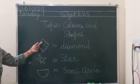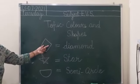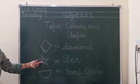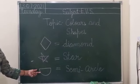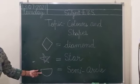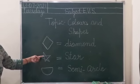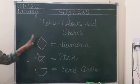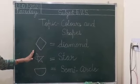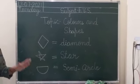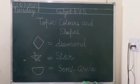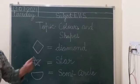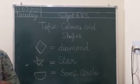Let's revise. Say: diamond shape, star shape, semi-circle shape. Diamond, star, semi-circle. Okay. Now we will draw these 3 shapes in the notebook. Then we will do colors that we have already learned in these shapes. Let's start.